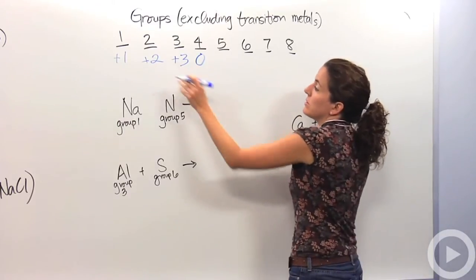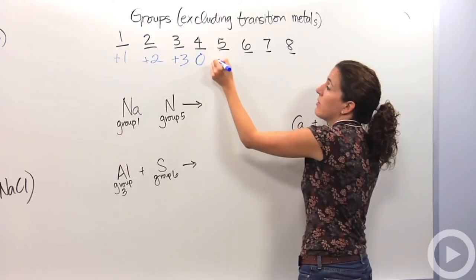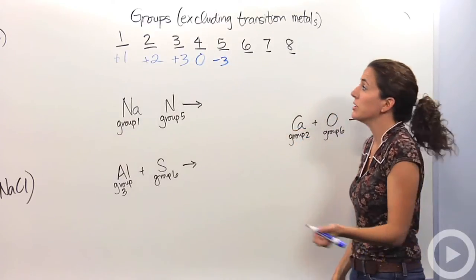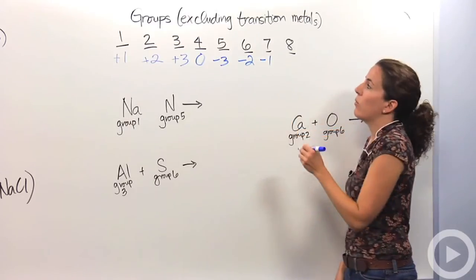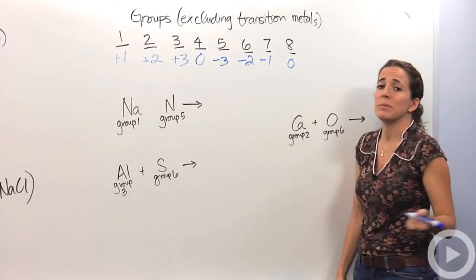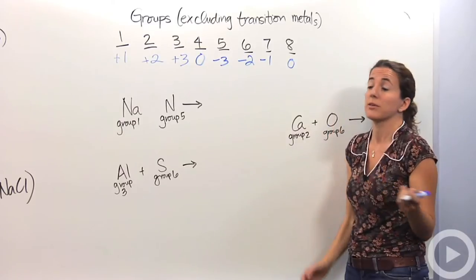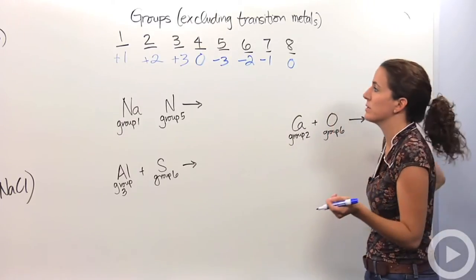Group five can either gain three or lose those five, and this is the one that's actually going to gain those three, making it a negative three charge. Group six is going to gain those two. Group seven is going to gain that one. And group eight, we know, loves to be the way it is, so it's going to keep it the way it is. They're noble gases. We're not going to touch those guys.